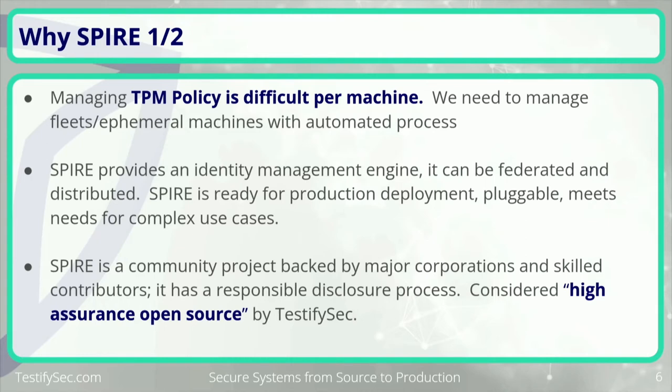We're using Spire to do this because TPM policy is pretty difficult to manage per machine. We're using fleets of machines that are ephemeral — they're coming up, they're coming down. We're changing them all the time with immutable states, so if we have to change a TPM policy for that, the tooling around that might be a little bit complex.